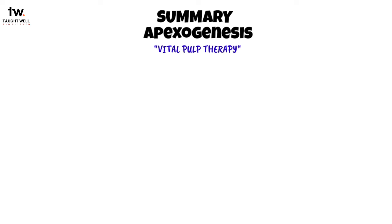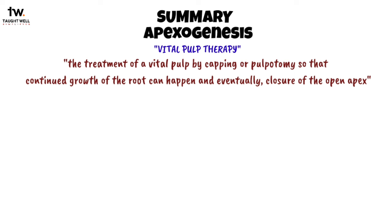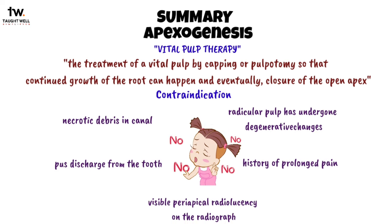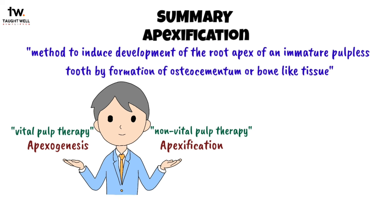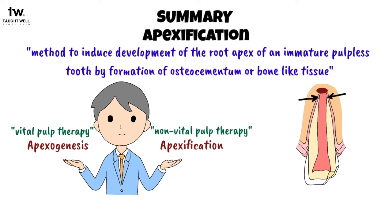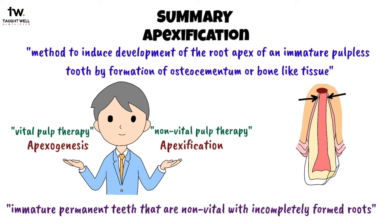To recap: apexogenesis comes under vital pulp therapy, defined as the treatment of a vital pulp by capping or pulpotomy so that continued root growth and eventual closure of the open apex can happen. Its contraindications include degenerative changes in the radicular pulp, pus discharge, prolonged pain, necrotic debris in the canal, and visible periapical radiolucency. Apexification is defined as a method to induce development of the root apex of an immature pulpless tooth by formation of osteocementum or bone-like tissue, and comes under non-vital pulp therapy. Its objective is to induce either closure of the open apical third or formation of an apical calcific barrier for obturation.